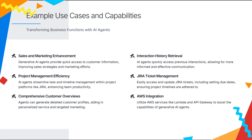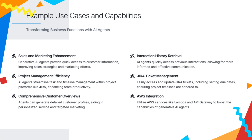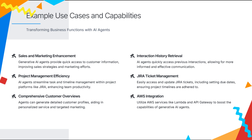Integrating generative AI agents into business operations can significantly enhance efficiency across various functions. By leveraging AWS services such as Lambda and API Gateway, these agents can be tailored to meet specific organizational needs. In sales and marketing, generative AI agents can swiftly access and analyze customer data, including preferences and interaction histories, enabling personalized marketing strategies and timely responses. For project management, these agents facilitate efficient task and timeline management within platforms like Jira by retrieving and updating project statuses, ensuring teams stay aligned with goals and deadlines.